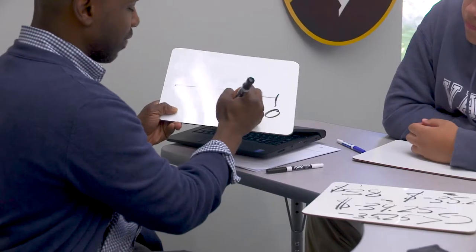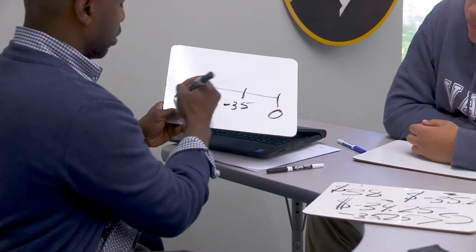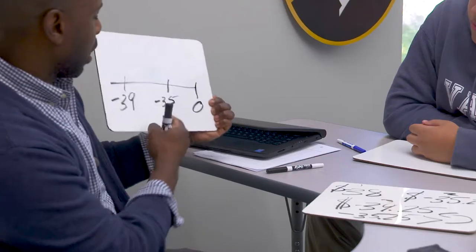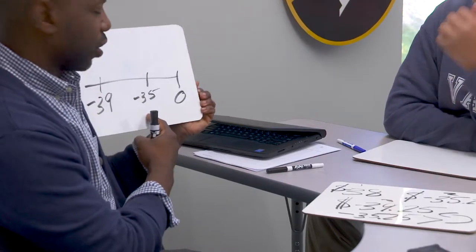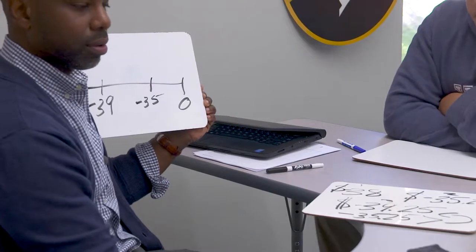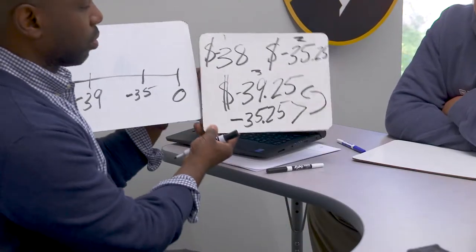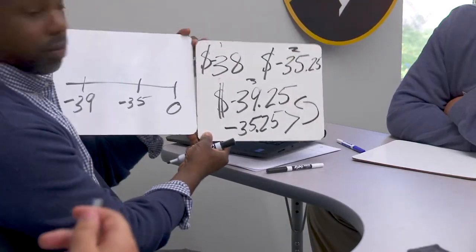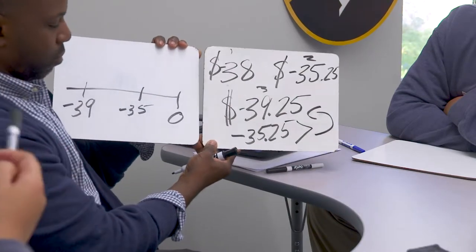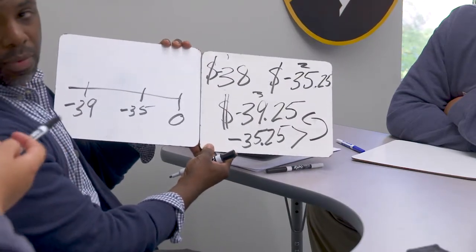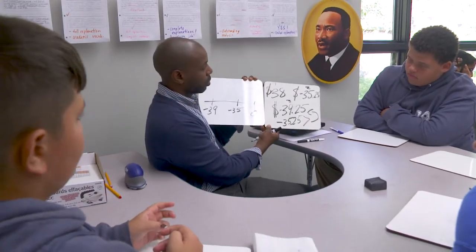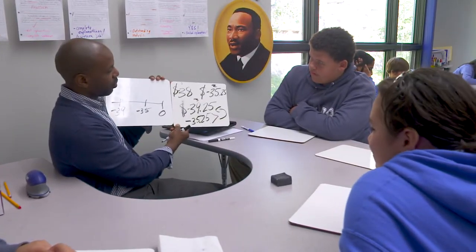Wouldn't negative 35 and negative 39 line up this way? We said if it's closer to zero it has a greater value. So what's the difference here? 39 is farther — it's more to the left of 35, so it's farther away from zero.